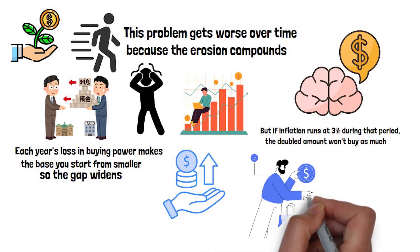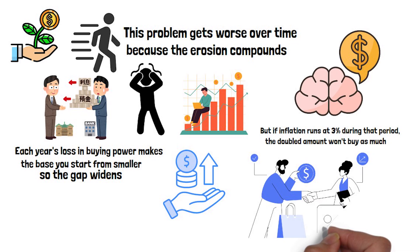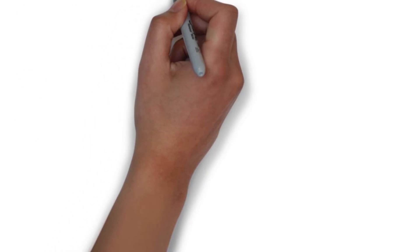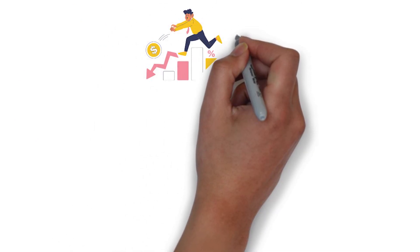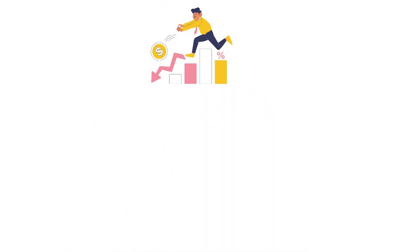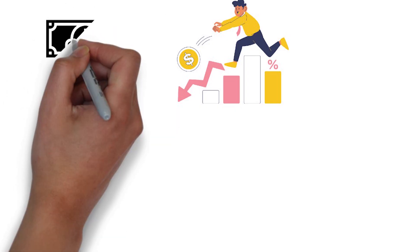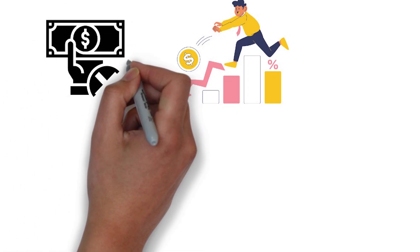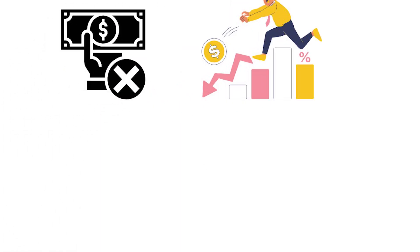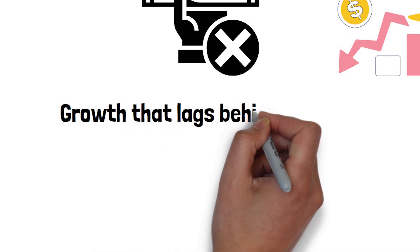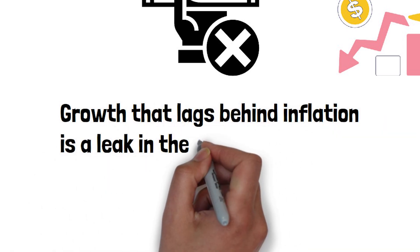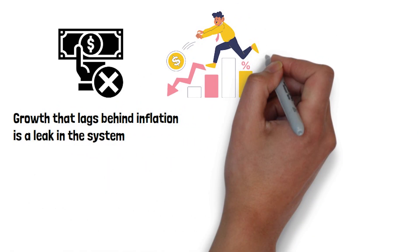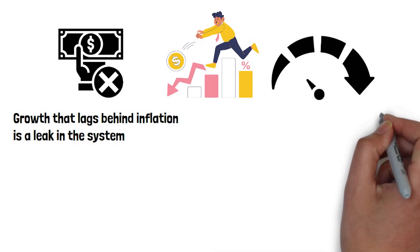Even earning 3% in a 4% inflation environment still leaves you falling behind in purchase power. This is why sticking to the so-called safe path of low-yield accounts can be misleading. Safety in terms of protecting your principal doesn't mean safety in terms of maintaining your wealth. Growth that lags behind inflation is a leak in the system. Gradual and silent, but damaging over the long run.